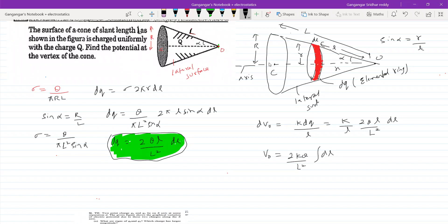Now what is the slant height of this? 0 to capital L, or slant length. So 2KQ by L squared, all this will be... K value substitute. So the potential will be Q by 2 pi epsilon naught L.